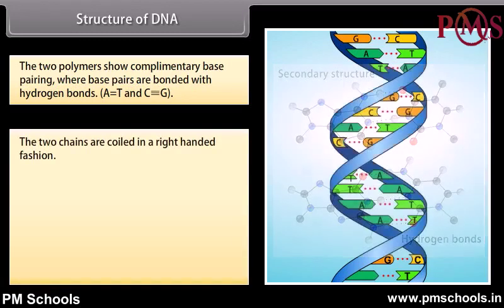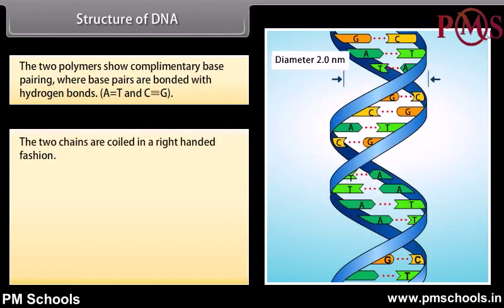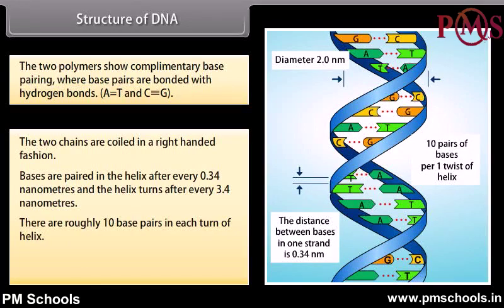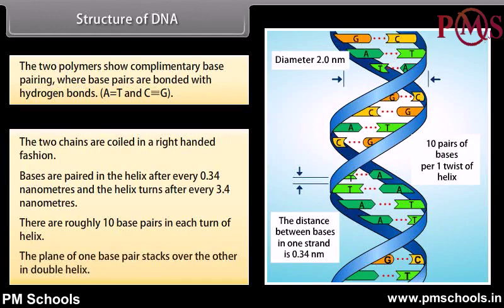The two chains are coiled in a right-handed fashion. Bases are paired in the helix after every 0.34 nanometers, and the helix turns after every 3.4 nanometers. There are roughly 10 base pairs in each turn of the helix. The plane of one base pair stacks over the other in the double helix.